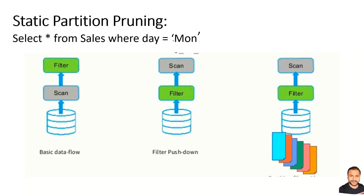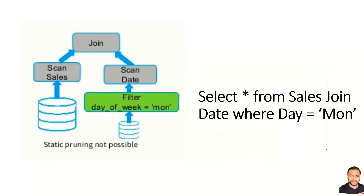In the current versions we have static partition pruning. For example, if from a sales table I try to apply a filter on a column like day, the only data I want Spark to process is for that particular filter. Spark optimizes this by pushing down the filter before the table scan, so only the required filtered data is scanned further. For example, if we have a number of different partitions — represented by different colors — only the selected partitions meeting the filter are sent forward for Spark to process. This is available in Spark 2.